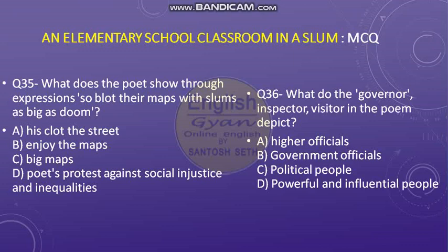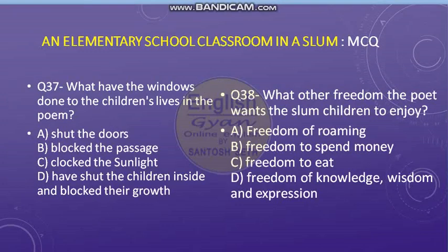Question number 36: What do the governor, inspector, and visitor in the poem depict? Options: A — higher officials, B — government officials, C — political people, D — powerful and influential people. Question number 37: What have the windows done to the children's lives in the poem? Options: A — shut the doors, B — blocked the passages, C — blocked the sunlight, D — shut the children inside and blocked their growth. Question number 38.